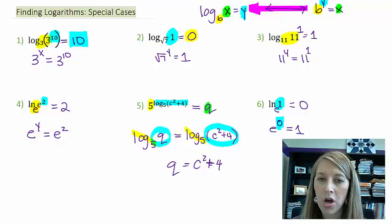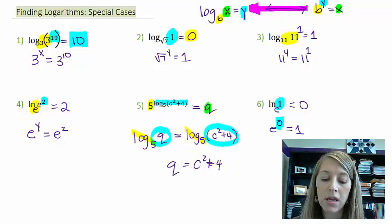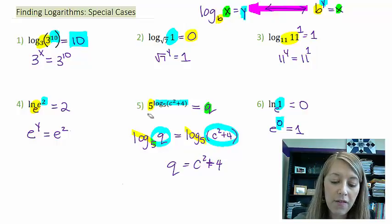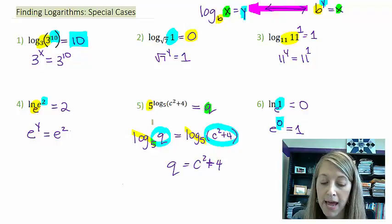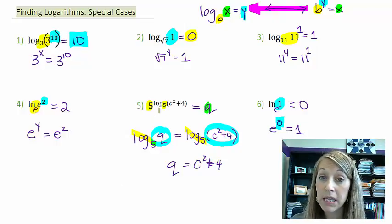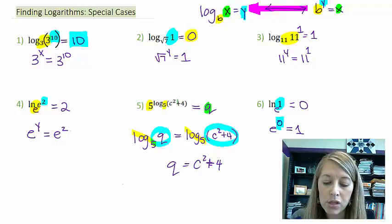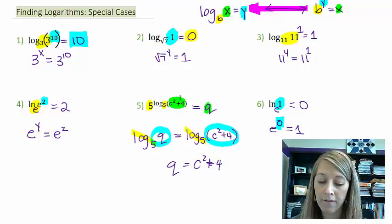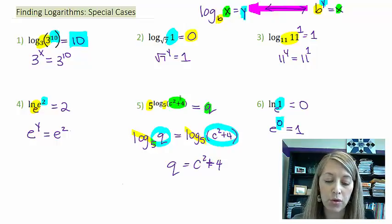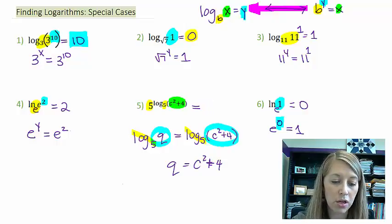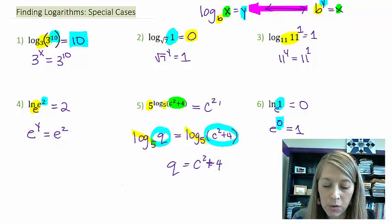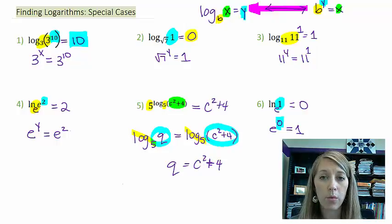Now that's probably a lot of work to figure out on your own, but here's the deal. This is one of the special cases. The thing to note is that if your bases match, if this base and this base match, they basically cancel out because we can convert it into that log format. So that means q is going to equal whatever is inside our log function. That's why this one is a special case. My answer here, we already said, was c squared plus four.